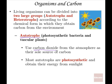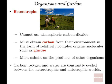Most autotrophs are photosynthetic and they actually obtain their energy from the sun. The heterotrophs, on the other hand, are organisms that rely on the production of glucose — or the production of carbon — from other organisms.